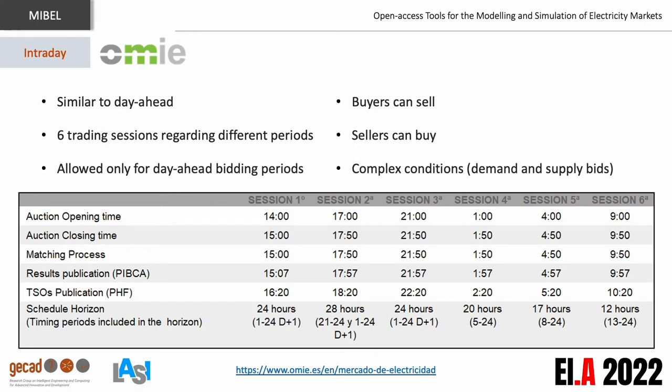Intraday markets are an essential tool allowing market players to adjust the day-ahead market's results. In Mibel, the intraday market is similar to the day-ahead market. However, it includes six trading sessions regarding different hourly periods, as shown in the table. To participate in this market, players must have participated in the day-ahead market and submitted bids in the same trading periods. In this market, buyers may sell their surplus and sellers can buy faulty demand. Both types of players can submit complex conditions.